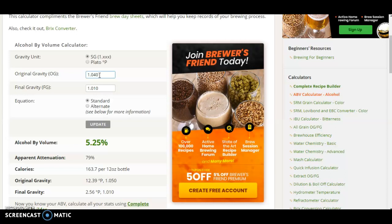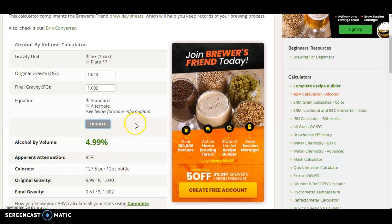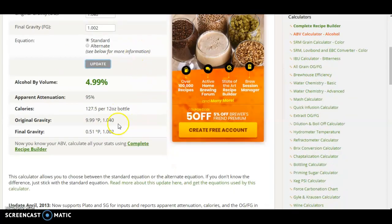The final gravity says 1.002, and obviously it's going to be 5%. That's the strength of your beer. This is a handy little tool here because it gives you your attenuation of the fermentation, calories per pint, and that just confirms your original gravity and your starting gravity.